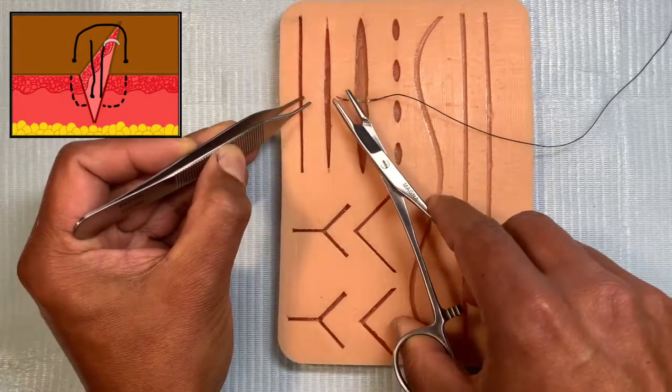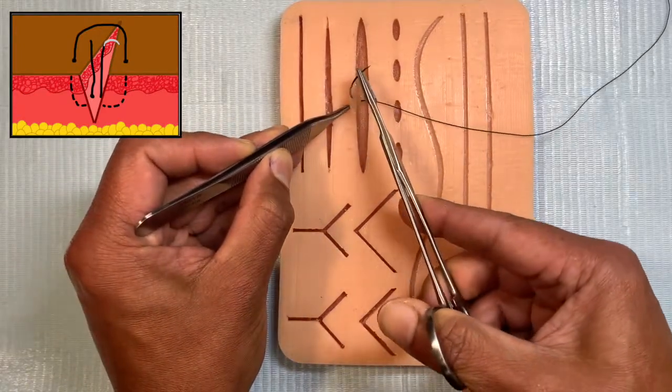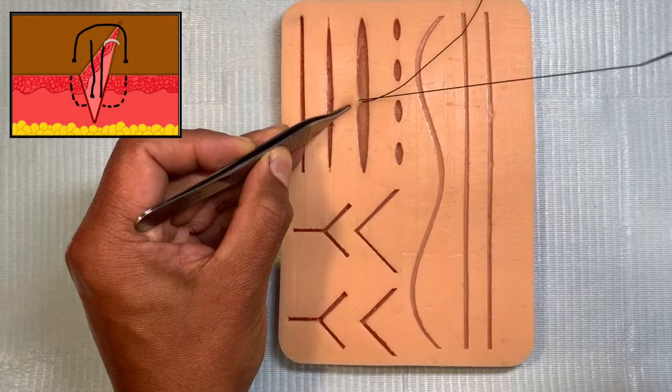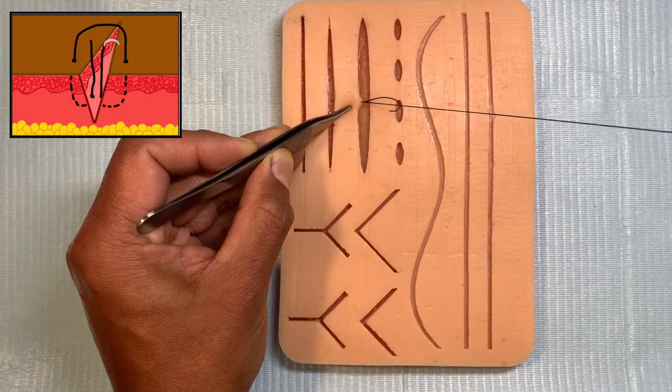Now the surface should be coming to the deeper dermis, not to the very top place of the dermis. So that's my first bite. So that's my D to S.